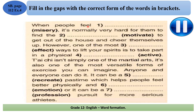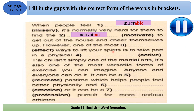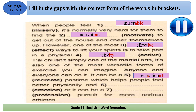Now let's check answers. Number one: '___ feel' — I need an adjective from 'misery' → 'miserable'. Number two: 'find the ___' — I need a noun from 'motivate' → 'motivation'. Number three: 'the most ___ ways' — I need an adjective from 'effect' → 'effective'. Number four: 'a physical ___' — 'physical' is an adjective, so we need a noun from 'active' → 'activity'. Number five: 'it can be ___ free time' (noun) — I need an adjective from 'recreate' → 'recreational'. Number six: 'physically and ___' — I have an adverb so I need another adverb from 'emotion' → 'emotionally'. And 'or it can be a ___ pursuit' — I need an adjective from 'profession' → 'professional'.